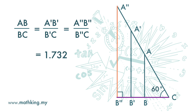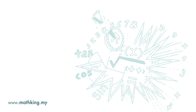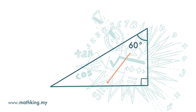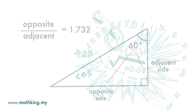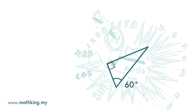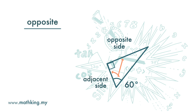We can verify this by actually measuring the length of the sides and computing the ratio. For this triangle, the ratio of the length of the opposite side to the length of the adjacent side is 1.732. And for the next triangle, the ratio of the length of the opposite side to the length of the adjacent side is also 1.732.